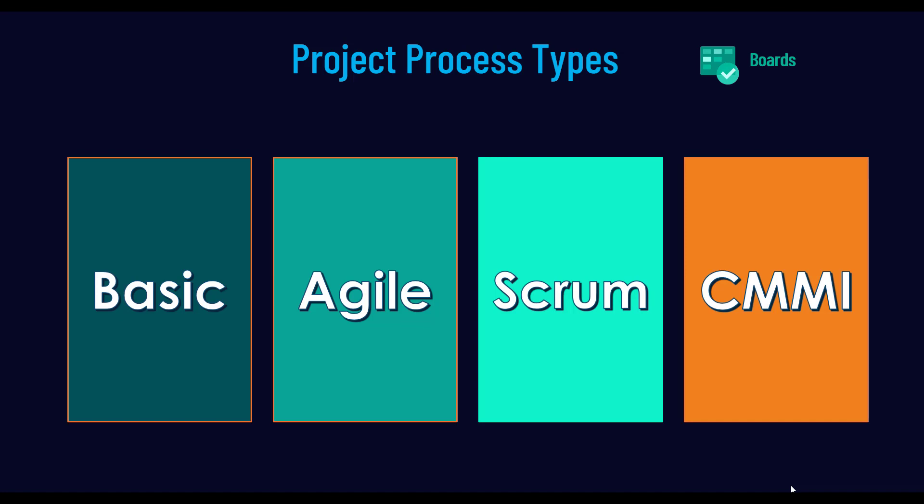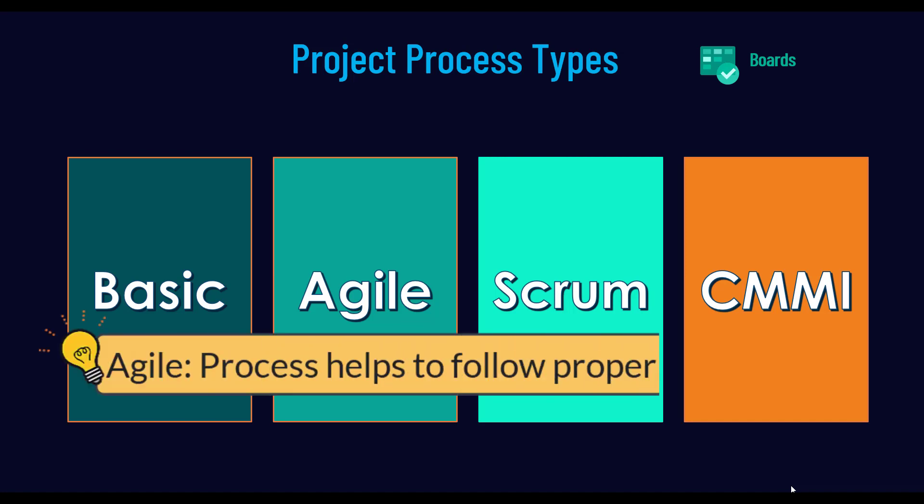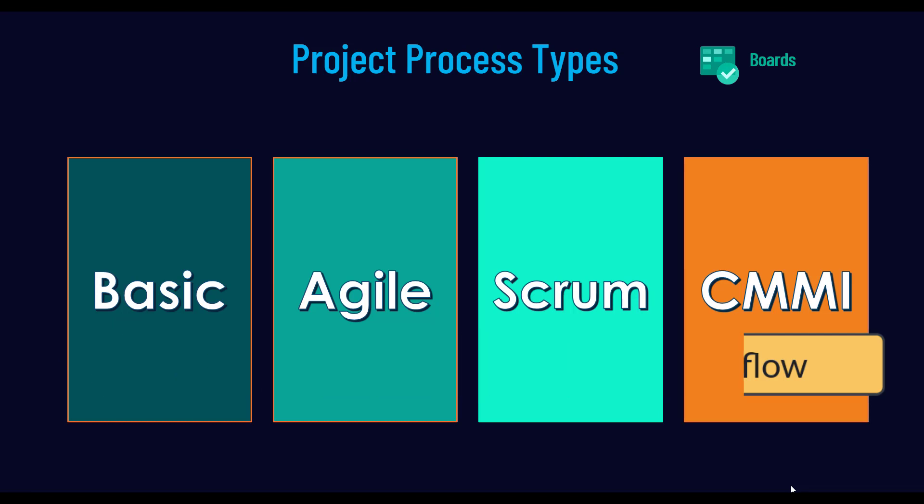Next you have the agile process, which is the process type suitable for projects that want to follow a proper agile cycle in their project development life cycle. You can go ahead with the agile process type for that.